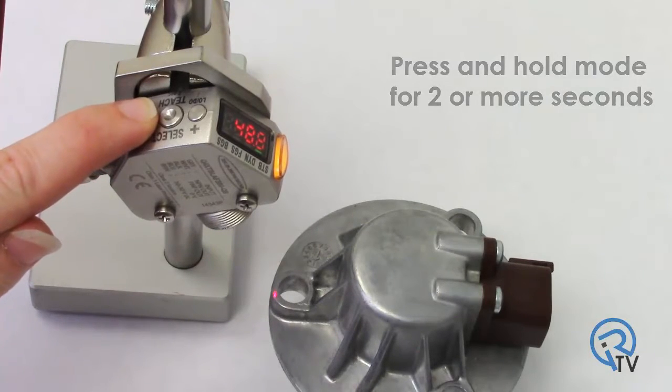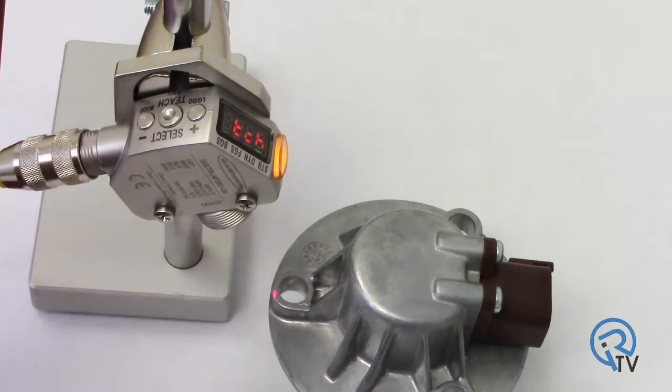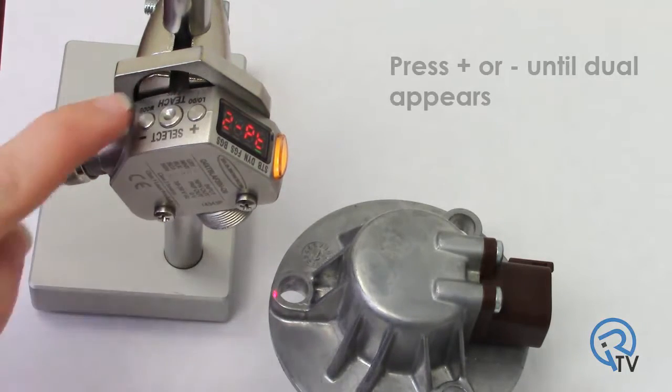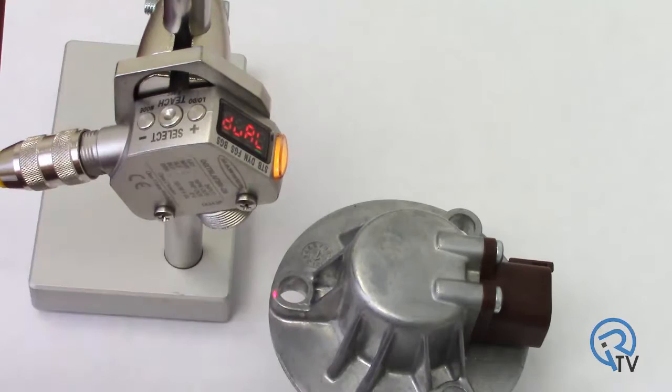Press and hold mode for two or more seconds. Teach will appear. Press the Select button to enter the Teach menu. Press the Plus or Minus button until Dual appears. Press the Select button to enter into Dual Mode.